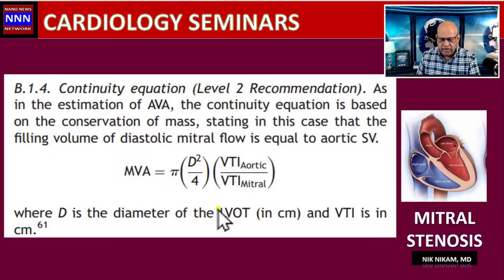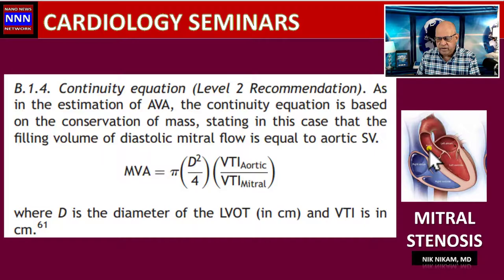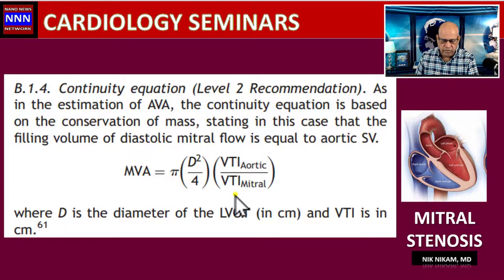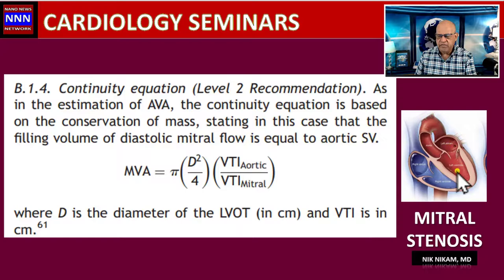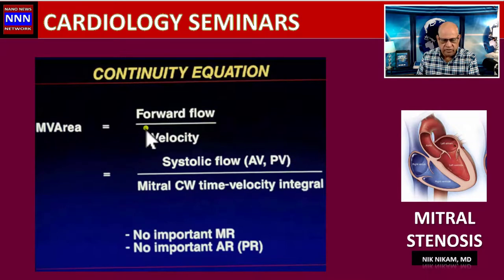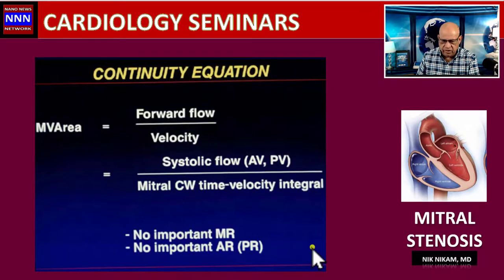Finally, we have the mitral valve continuity equation, which is similar to the equation used in aortic stenosis. Using left ventricular outflow tract diameter and pressures, we can calculate the aortic valve area. For mitral stenosis, the mitral valve area equals forward flow divided by velocity — specifically, systolic flow through the aortic or pulmonic valve divided by the mitral continuous wave time-velocity integral. Most often, pressure half-time and planimetry are the preferred methods when images are optimal.